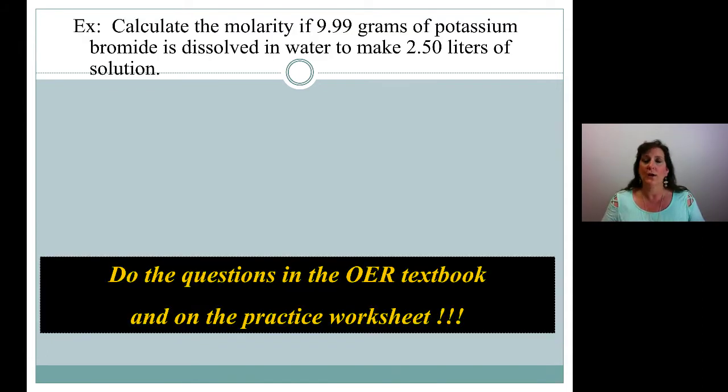So let's go straight to an example. Calculate the molarity if 9.99 grams of potassium bromide is dissolved in water to make 2.50 liters of solution. Now let's think about molarity. It was moles per liter. I gave you liters, 2.50 liters of solution.